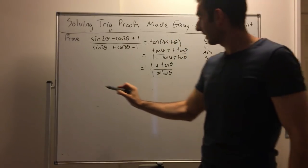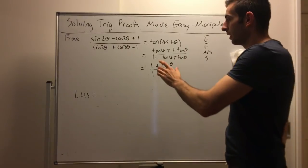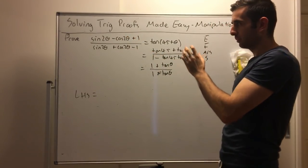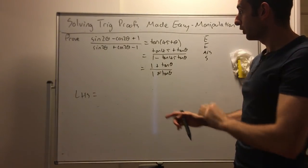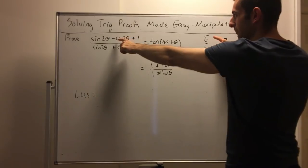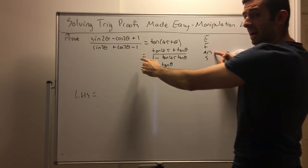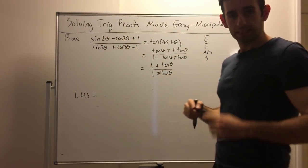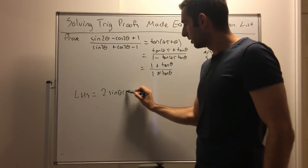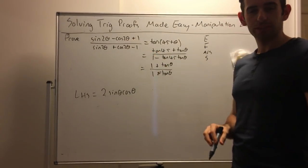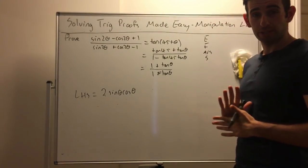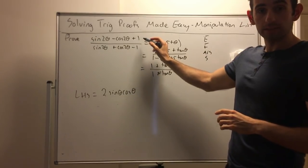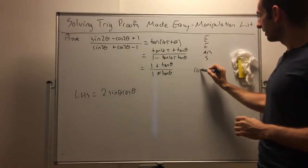We start with the left-hand side, because going from θ to 2θ is harder than from 2θ to 2θ — we have double angle formulas that take 2θ down. Going through the list: expand? No. Factorize? No common factors. Add or subtract fractions? It's a single fraction. So we substitute identities — our double angle formulas. For sin2θ there's only one option. For cos2θ there are three options, but we pick the one that makes life easier. Noticing there's a +1 in the numerator, we look for a cos2θ formula containing a 1.